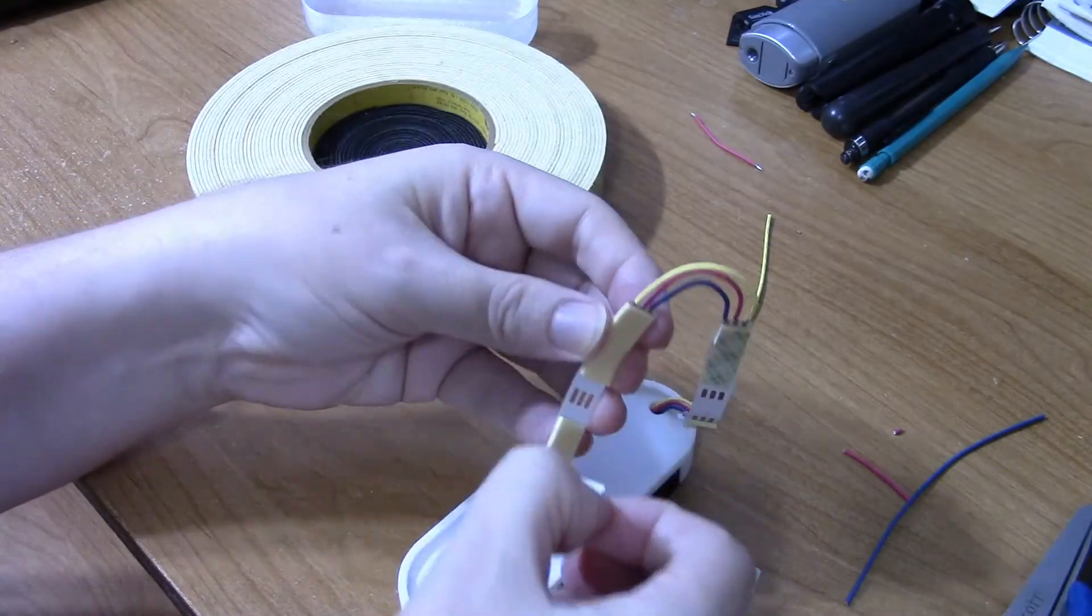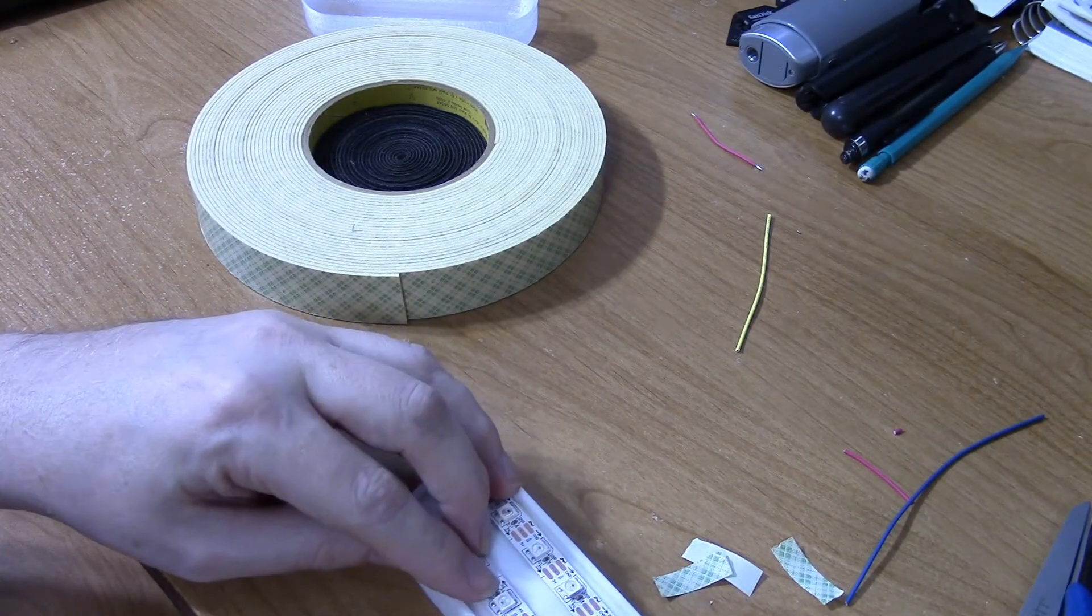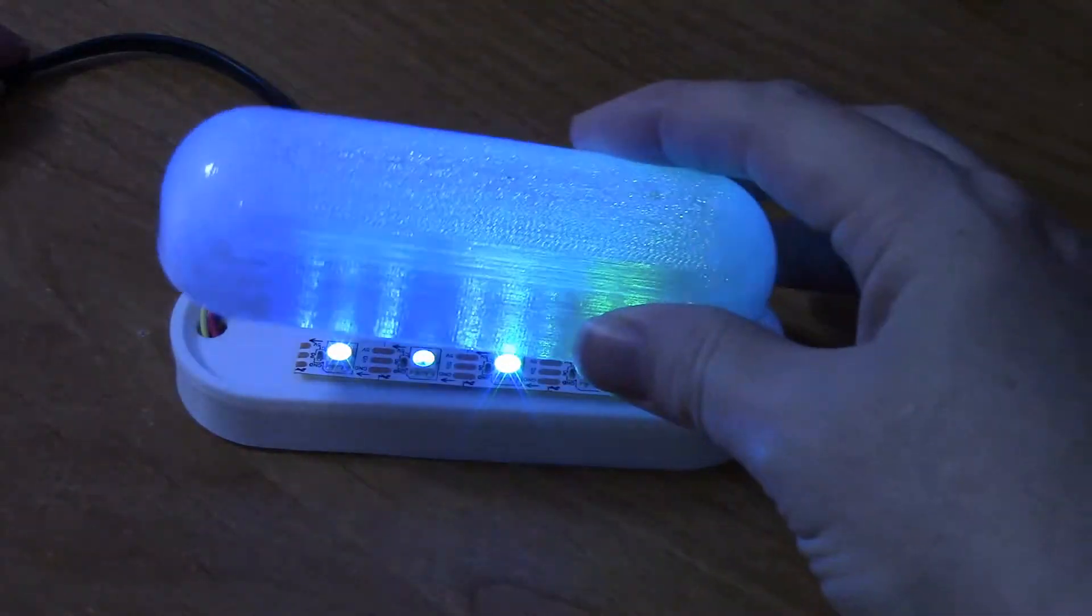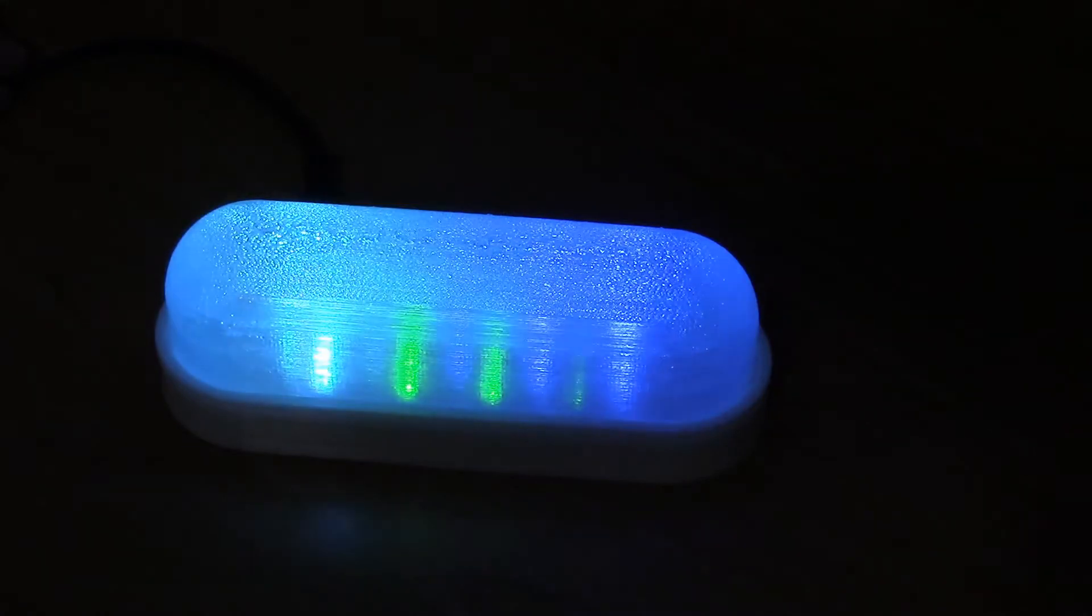Cut and apply double sided foam tape to the light strips and attach to the base. Apply power, attach the dome, and enjoy the splendor of your new night light.